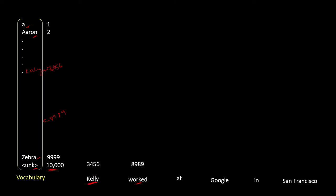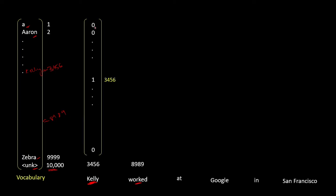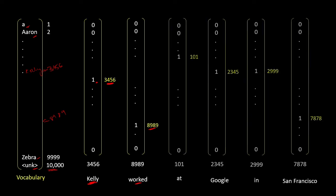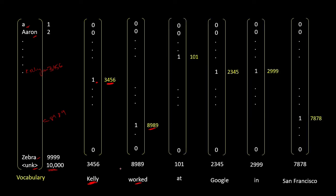Once we have a number associated with each word, we can feed them to our network, but we also need to convert these numbers into a one-hot representation. A one-hot representation is a vector where all values are zero except at the word's position — for 'Kelly' at position 3456, that index is one. Similarly, the one-hot vector for 'work' has a one at position 8989. We convert all remaining words into this one-hot form and feed them to our network.